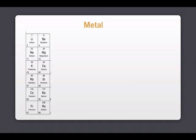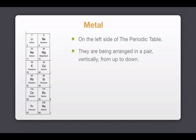Metal elements. They are being located on the left side of the periodic table. The elements are arranged in a pair, vertically from up to down. In total, there are 12 elements.